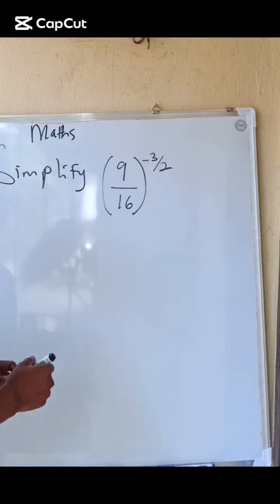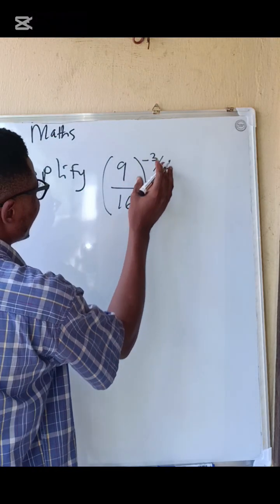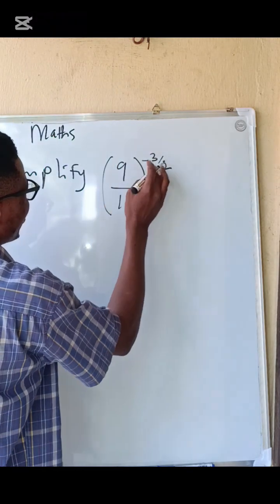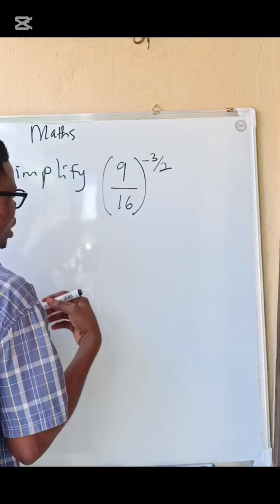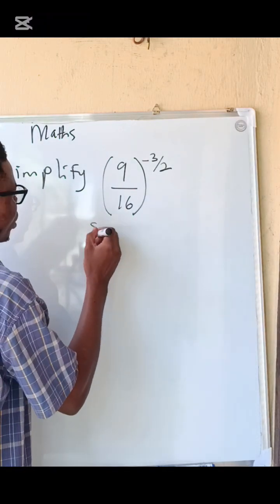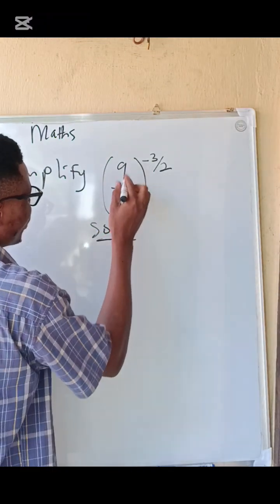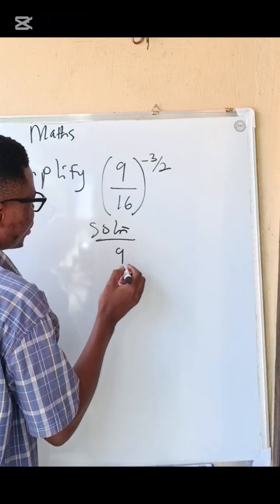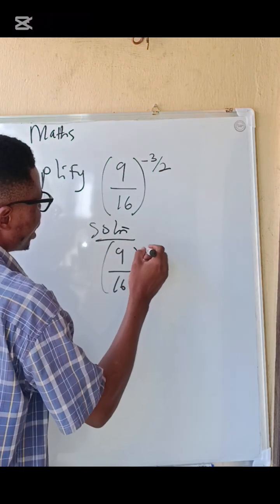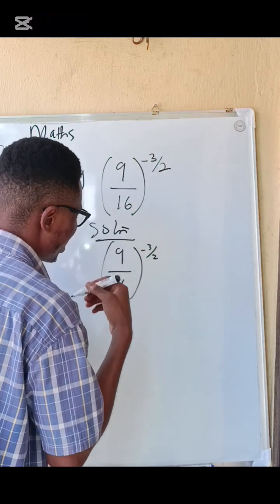Let's simplify this expression. We have 9 over 16 raised to the power of minus 3 over 2. The solution: we have 9 over 16 multiplied by the power of minus 3 over 2.